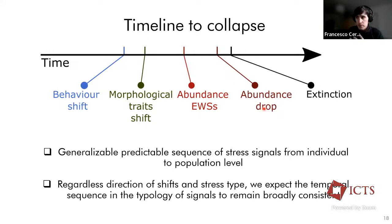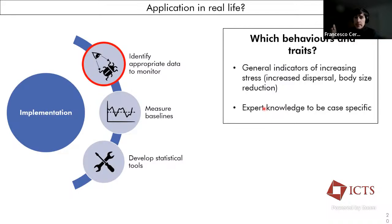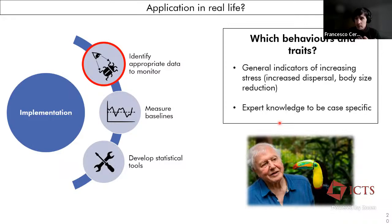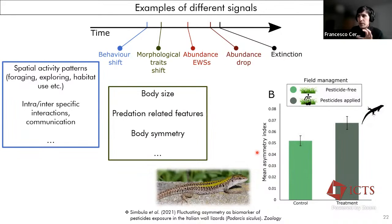Now, this is all good conceptual theory, but when we come to apply this in real life, there are several things we need to do. First of all, identify some appropriate data to monitor between the several indicators in behavior and morphology that we can obtain. Expert knowledge can help us to be case-specific, of course. A quick example could be that, in addition to spatial pattern activities, the stressor can act on the intra- and inter-specific interaction levels. Like this fish study found that a decrease in the resources, which is the coral cover, triggered a big decrease in the average probability of interaction between the individuals. Or the morphological traits shift can comprehend body size and predation-related features, as we saw, but also body symmetry indices that can be affected by, for example, the use of pesticides, as happened to this Italian wall lizard population.